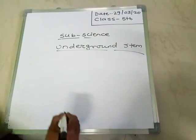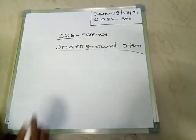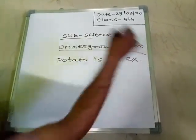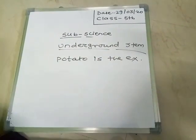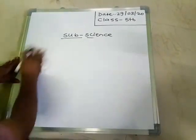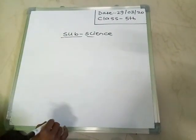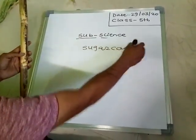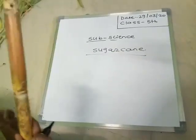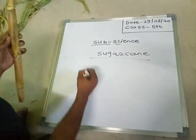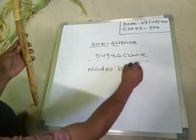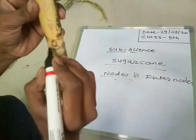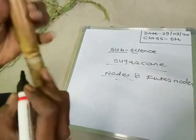Potato is a well-known example of an underground stem. The next type of stem is above the ground — for example, sugar cane. In sugar cane, we can see nodes and internodes. What is meant by a node? This area, from which leaves can arise, is called a node.